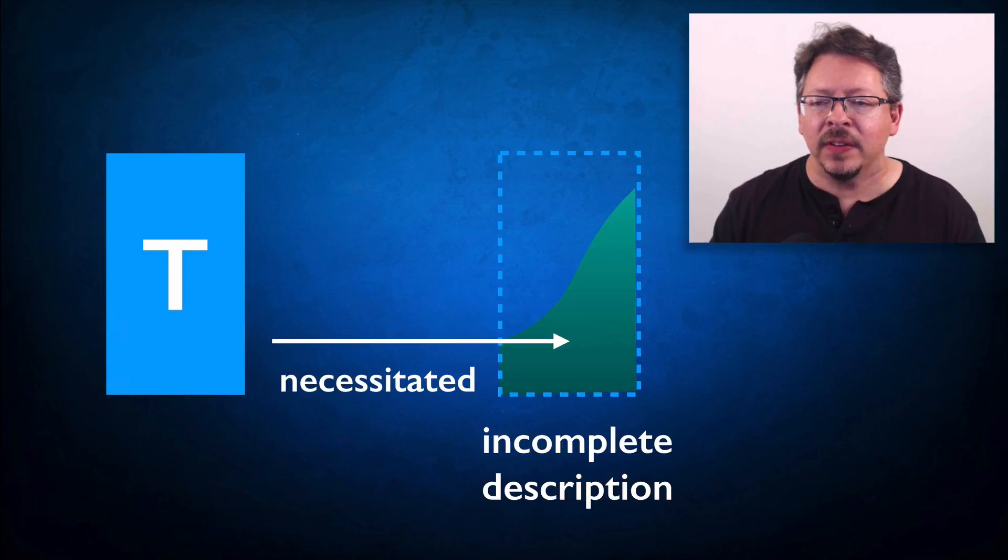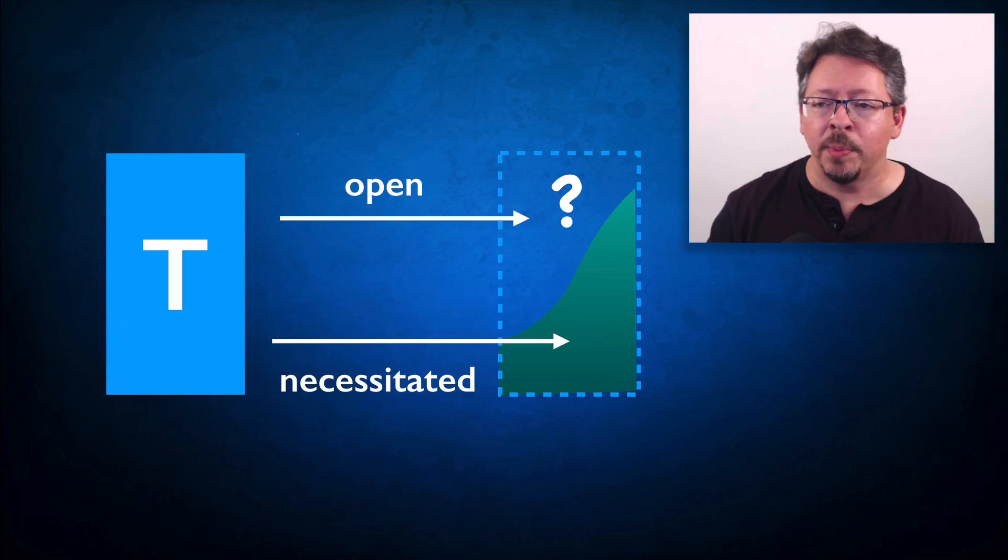And fourth, even if we can answer these questions and we can identify the similarities that matter, the description of the world that is necessitated by a theory will always be an incomplete description of the physical reality that's out there. Which means that there are parts of this description that are open that aren't necessitated by the theory.